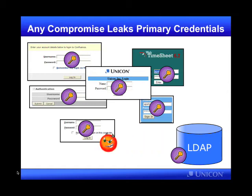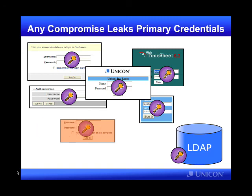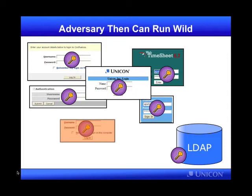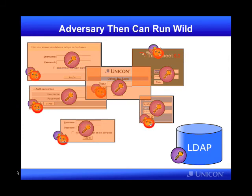And so, if the adversary comes along and compromises one of these applications, then not only does he compromise whatever that application gets at — perhaps whatever data is in it — but that password that the adversary is running off with is now useful for authenticating to all of the other applications sharing this same store of credentials. This is a bad thing: the weakest link in your environment, whichever application is most convenient to compromise, yields passwords that are useful in accessing other applications.